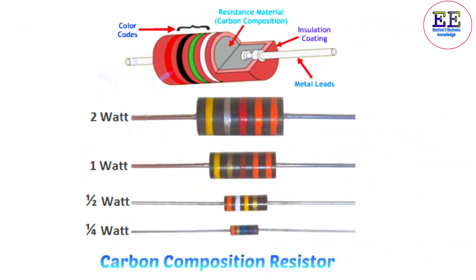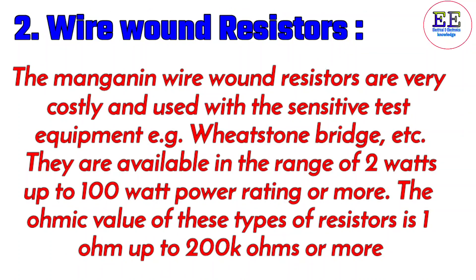This is the carbon composition resistor. Wire wound resistors. Manganin wire wound resistors are very precise and used with sensitive test equipment such as Wheatstone bridges. They are available in the range of two watts up to 100 watts power rating or more. The ohmic value of these types of resistors is one ohm up to 200k ohms or more.